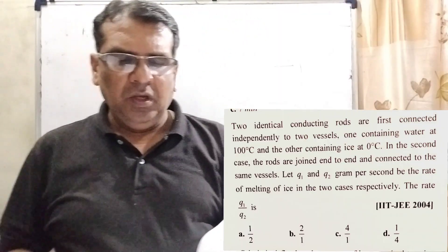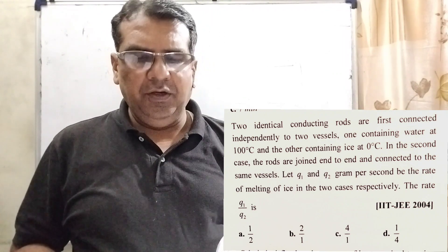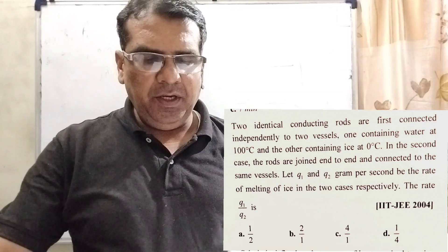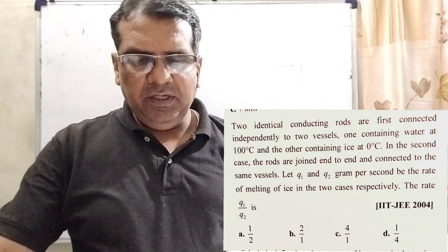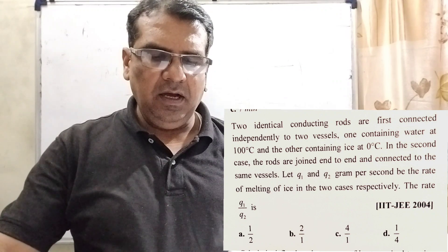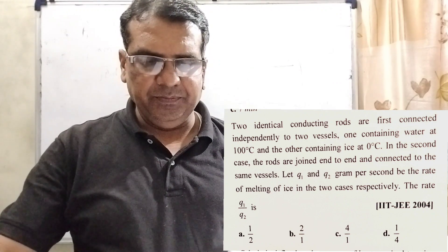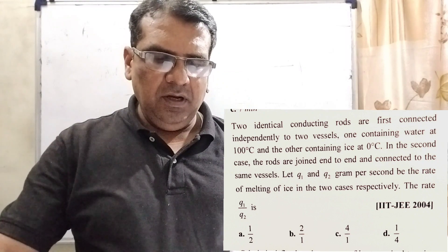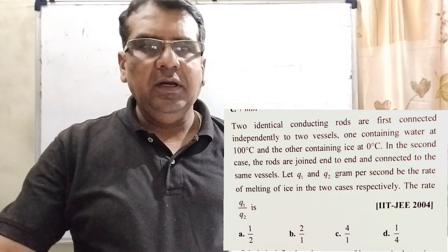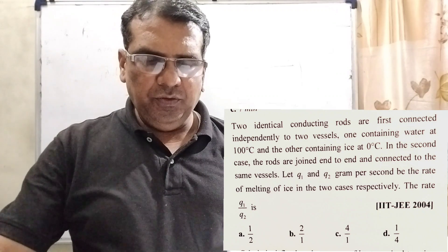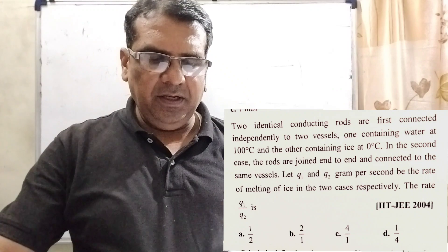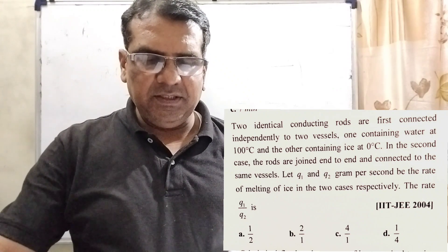Now here is the question. Two identical conducting rods are first connected independently to two vessels, one containing water at 100 degree Celsius and the other containing ice at 0 degree Celsius. In the second case, the rods are joined end to end and connected to the same vessels. Let Q1 and Q2 gram per second be the rate of melting of ice in the two cases respectively.